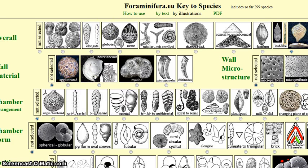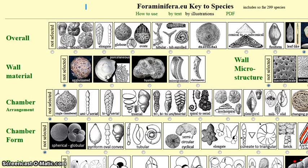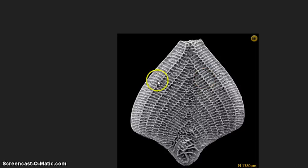The next two rows contain two categories — wall material and wall microstructure — that are not so easy to identify, though important in the classification of forms. You may want to leave them out. After studying the features of the chamber arrangement, which is the next category, you may want to choose 'biserial' because of these two parts.